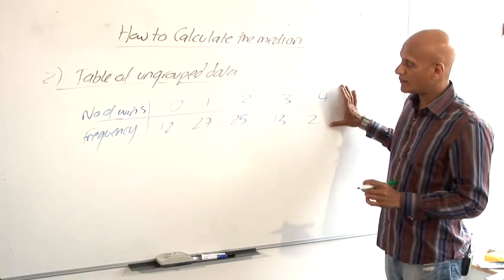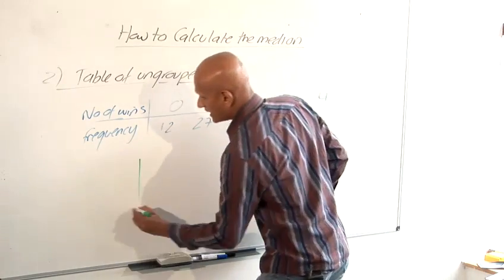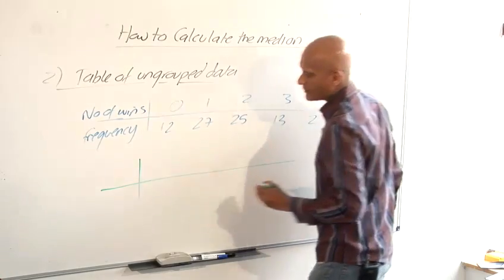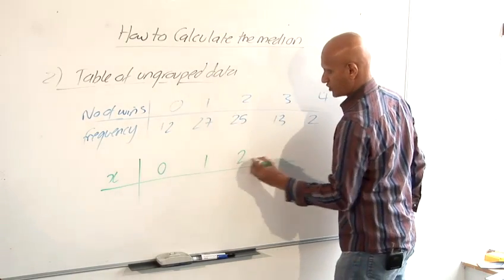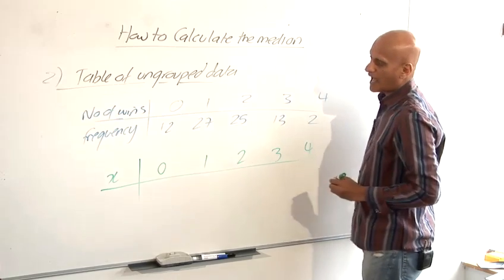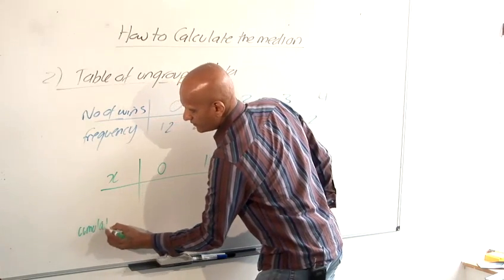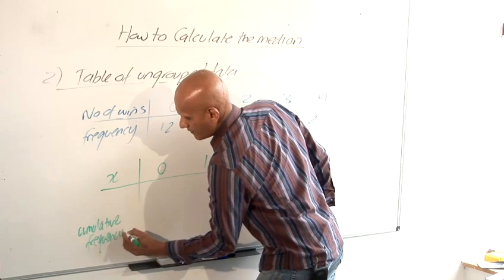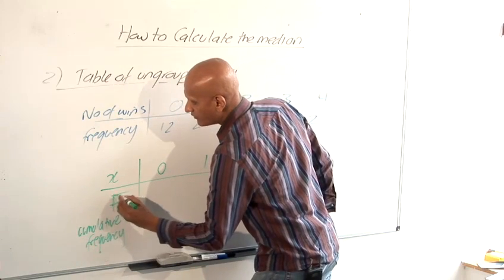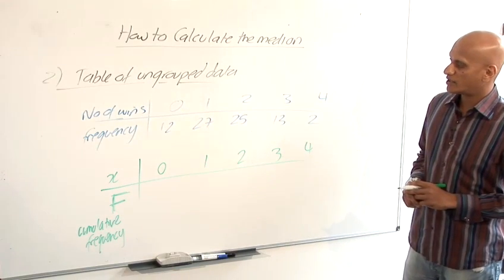We have to rewrite the table to a cumulative frequency table. So our cumulative frequency table is going to have the same thing on the top. I'll just call it X to abbreviate it. Zero, one, two, three, four. And at the bottom is going to have cumulative frequency. And we use the letter capital F for cumulative frequency. So if you see the letter capital F, you know it's referring to cumulative frequency.